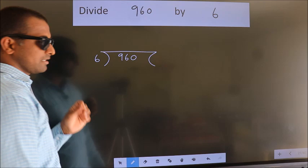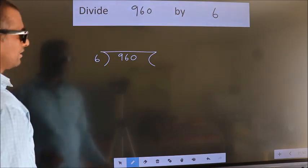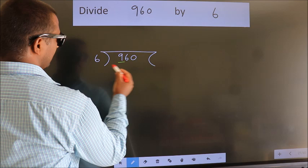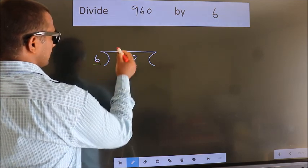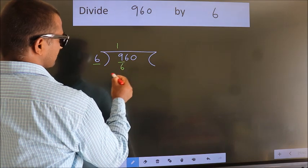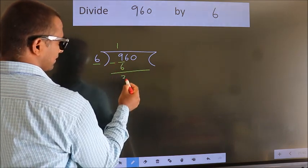This is your step 1. Next, here we have 9, here 6. A number close to 9 in 6 table is 6 once 6. Now, we should subtract. We get 3.